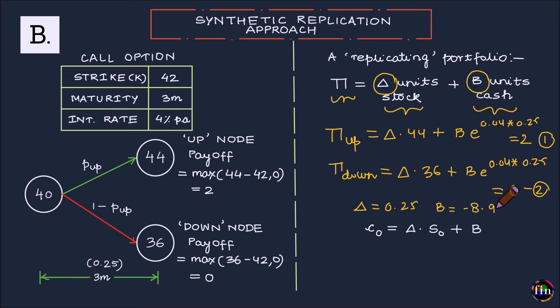The signs of delta and B tell me that since delta is positive, this particular investor will have to enter into a long position in the underlying stock. Since B is negative, it means that this investor will have to borrow this much money to be able to create this replicating portfolio.